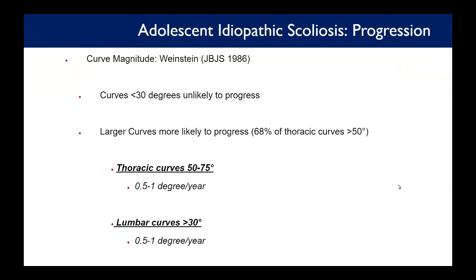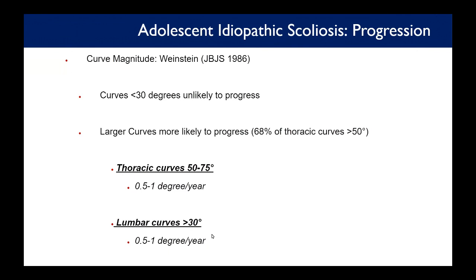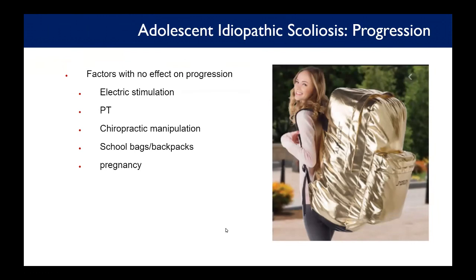Reviewing curve magnitude: curves less than 30 degrees are unlikely to progress; larger curves are more likely to progress. A key number is 0.5 to 1 degree per year for thoracic curves greater than 50 degrees. The same rate applies to lumbar curves but at a much lower curve magnitude. Factors that have no effect on progression include STEM, physical therapy, chiropractic care, large backpacks, and pregnancy.